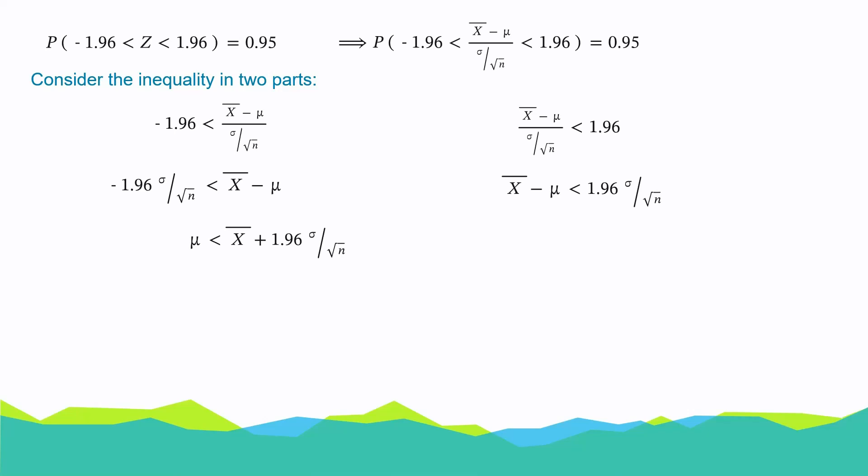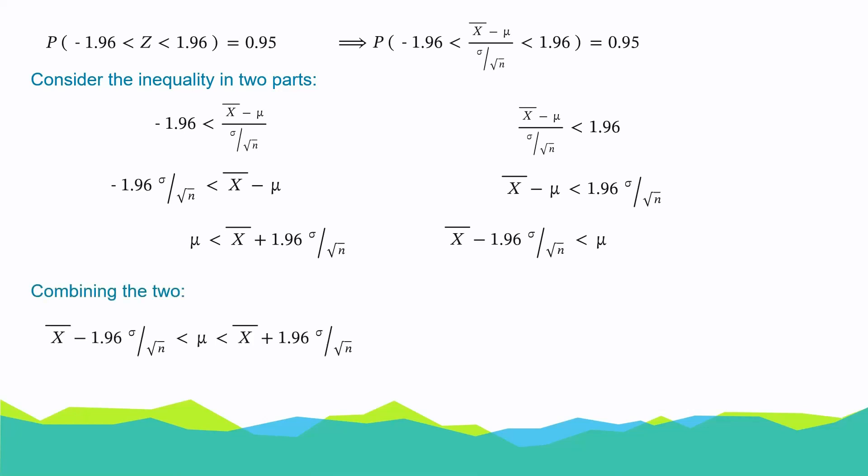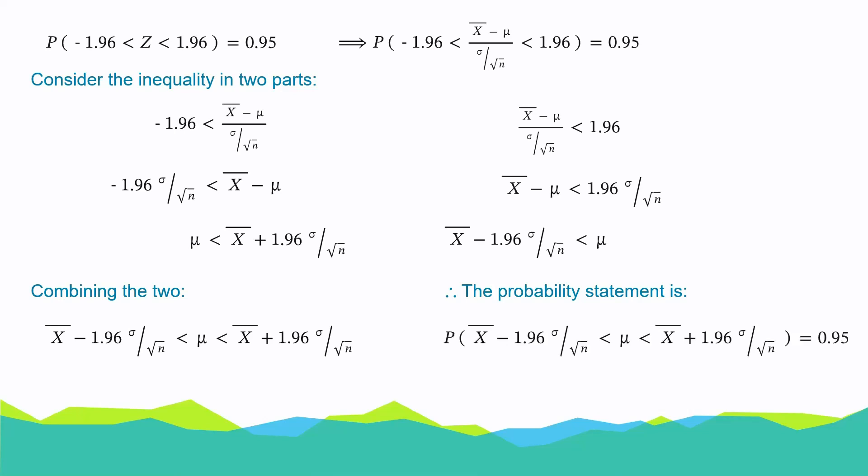For the other part, multiplying both sides by sigma over root n, we have x bar minus mu is less than 1.96 times sigma over root n. Rearranging, x bar minus 1.96 times sigma over root n is less than mu. Combining these two, we get x bar minus 1.96 times sigma over root n is less than mu, which is less than x bar plus 1.96 times sigma over root n, and that probability is equal to 0.95.